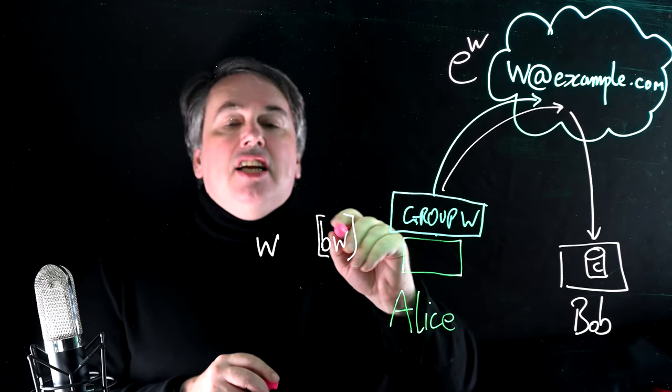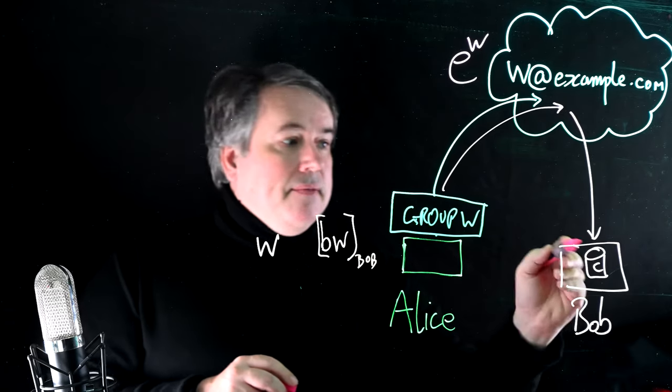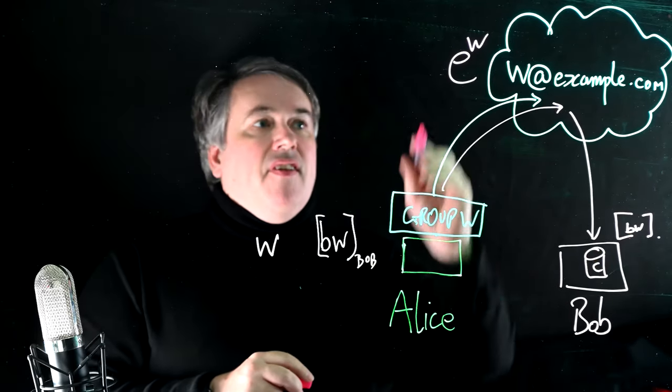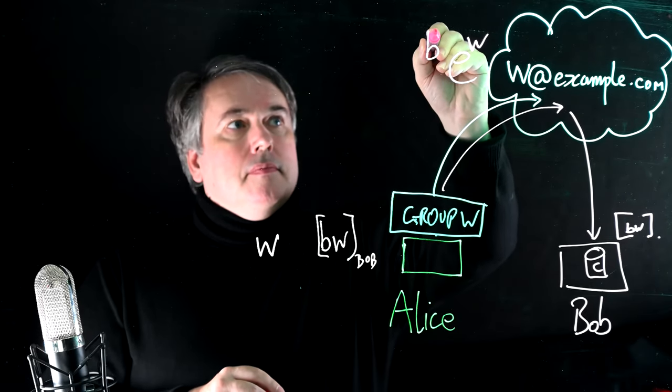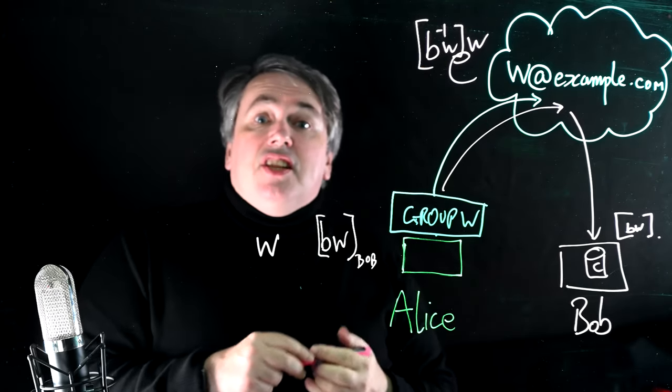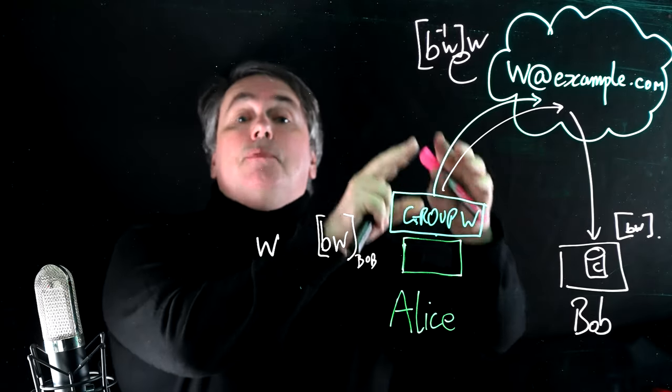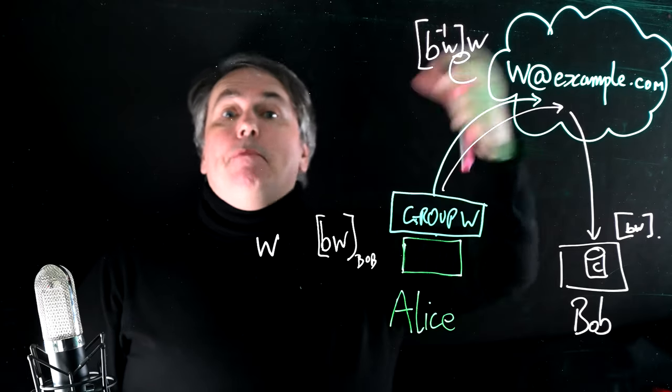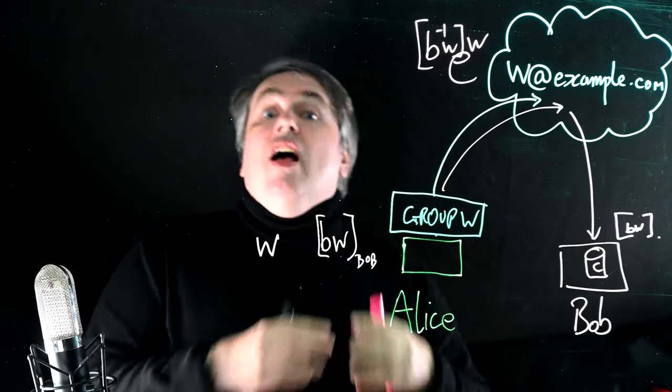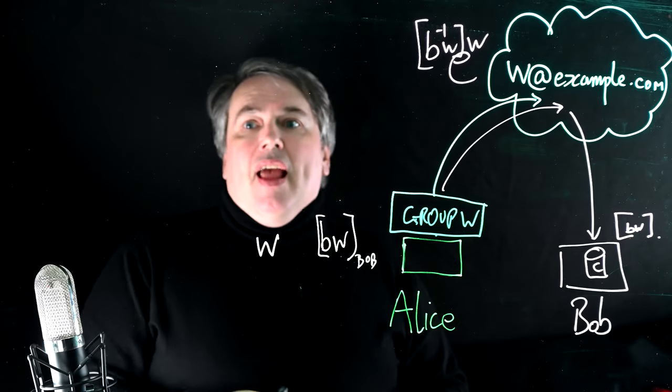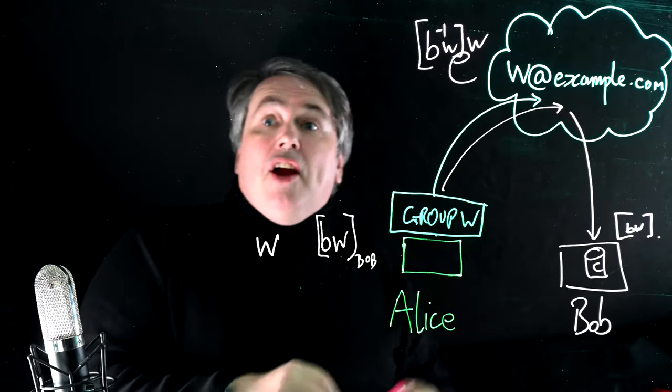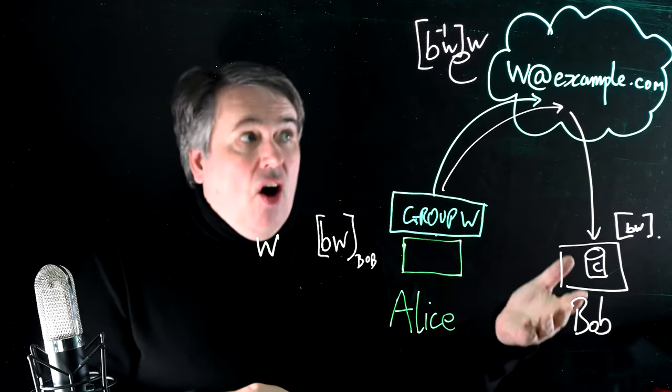Alice, when she sends this invitation, takes her private key W and creates a new key for Bob. Let's call that BW. That's just a random number. Then that is going to be encrypted under Bob's public key. Then the other half, the anti-Bob, is sent off to the service.